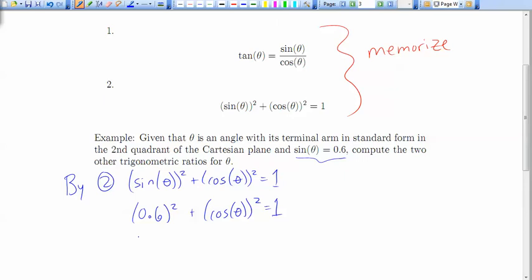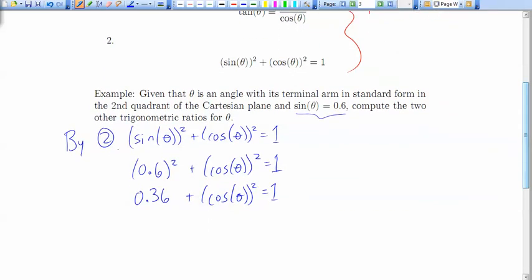Now 0.6 squared is 0.36. And now we have an equation that has just cos theta in it, it's the only thing that we don't know. So we can subtract 0.36 from both sides.